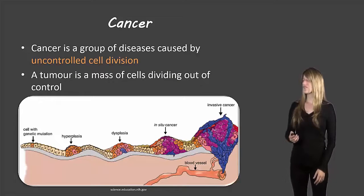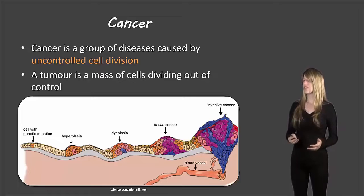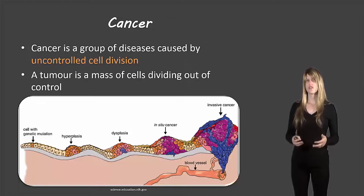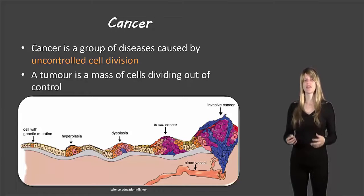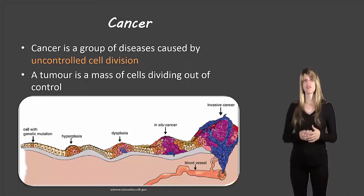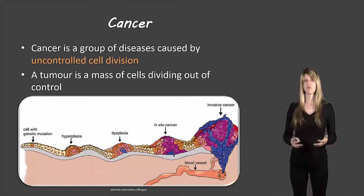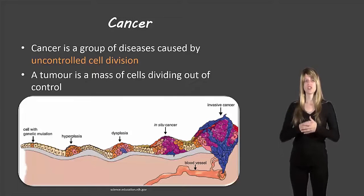Cancer is a group of diseases and they're all caused by uncontrolled cell cycle division. If you remember from our last video on the cell cycle, there are several checkpoints along the way to make sure that the cell is dividing properly. In this case, the cell division goes uncontrolled.